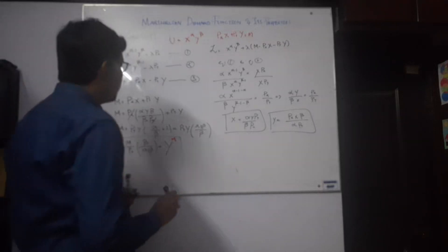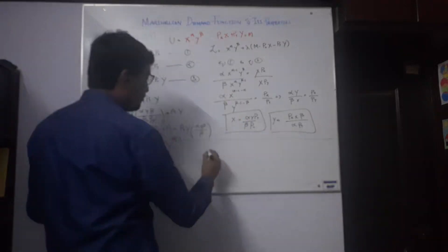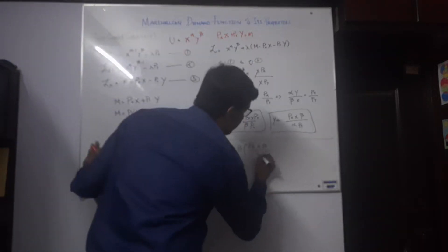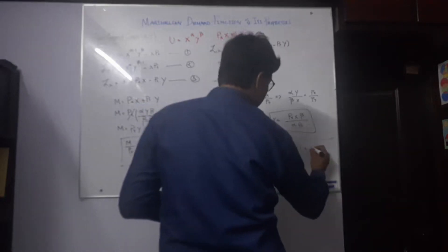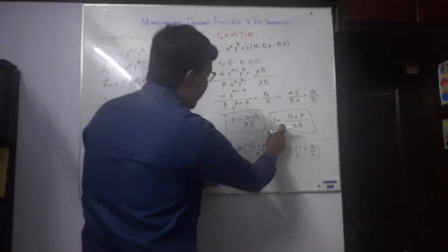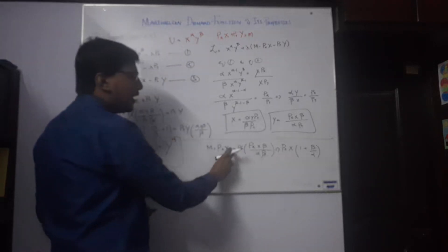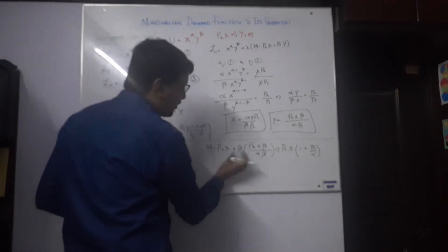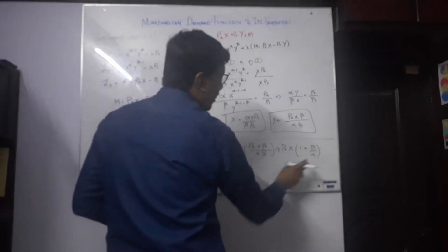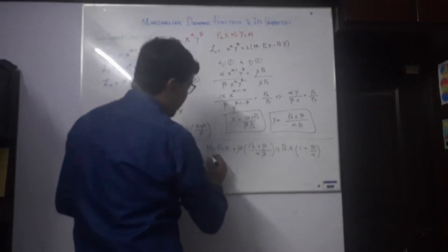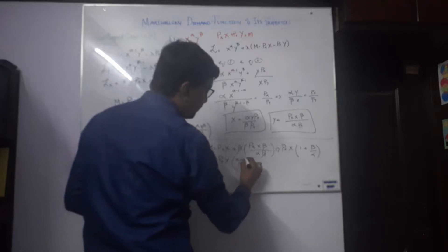A similar approach is used to calculate the X Marshallian demand function. We plug the value of Y into equation 3 to get PxX plus Py times the Y expression. The Py cancels out, and PxX is common to both terms. Taking PxX outside, the remaining bracket is 1 plus beta over alpha. Taking the LCM gives PxX times alpha plus beta over alpha.